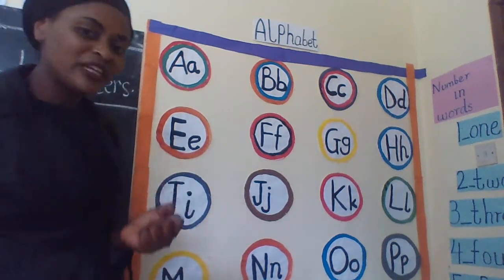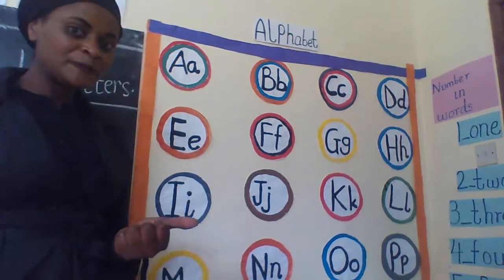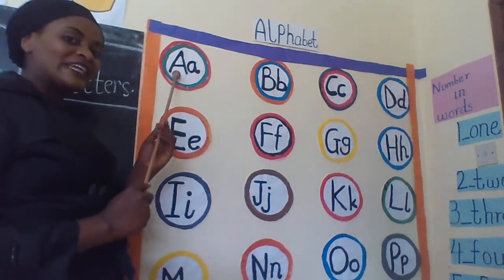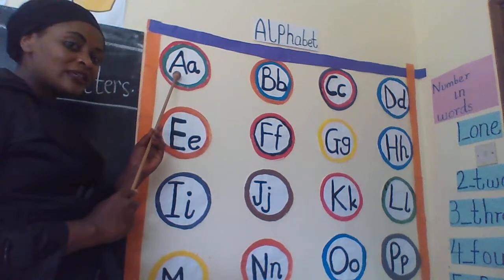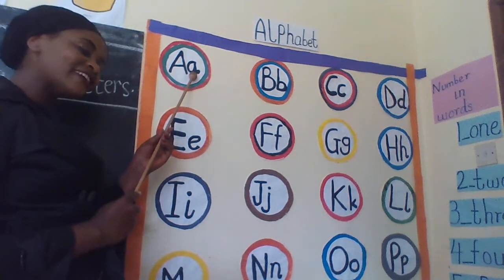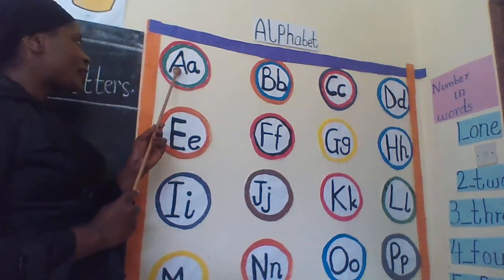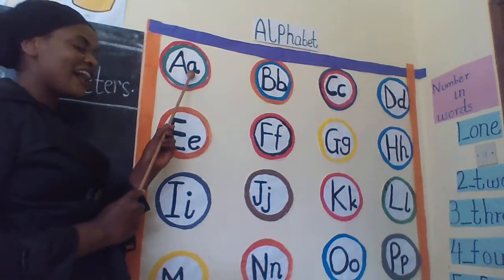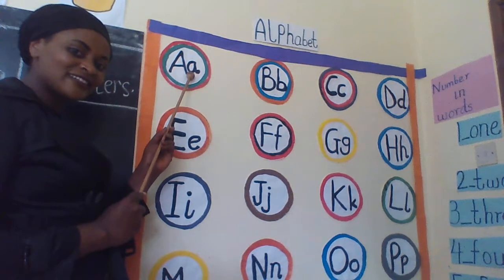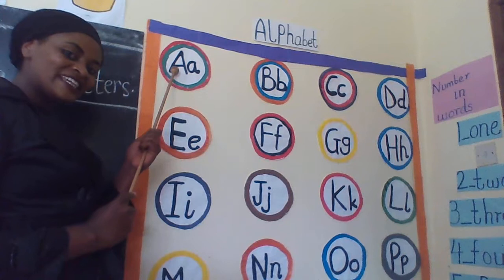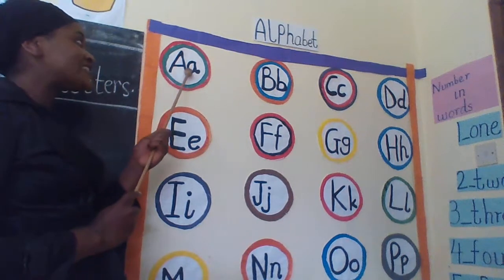Now let's read our alphabets. This is capital letter A, small letter A. Can you read after me? Capital letter A, small letter A. John, can you repeat after me? Capital letter A, small letter A.